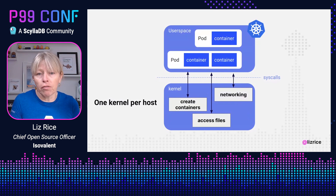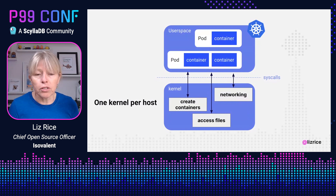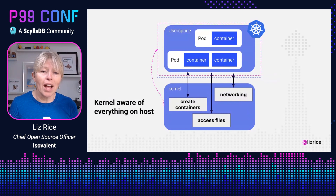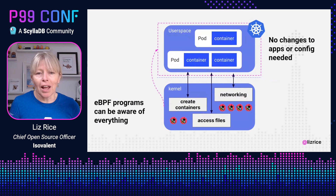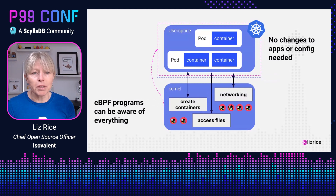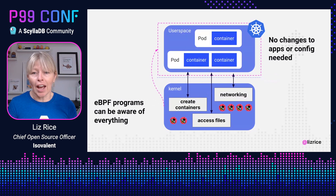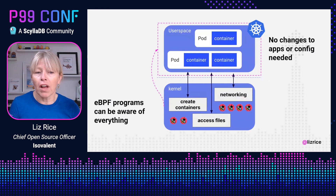That kernel is involved whenever any of those applications do anything interesting, and also whenever Kubernetes creates and destroys pods and containers. So the kernel is aware of everything happening on that machine, inside those pods or outside those pods — making it an ideal place to have instrumentation. If we use eBPF to add instrumentation by injecting programs into the kernel, they can be aware of everything.